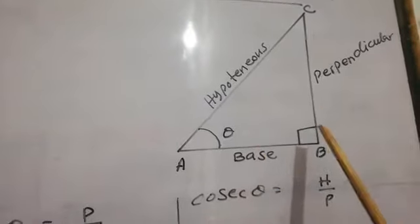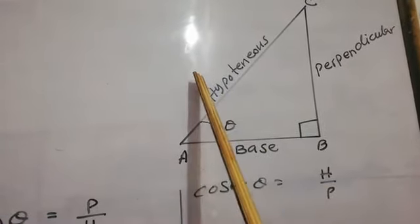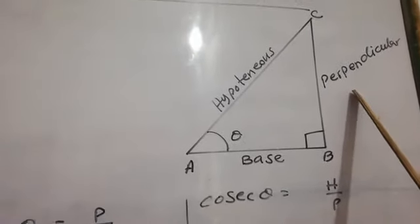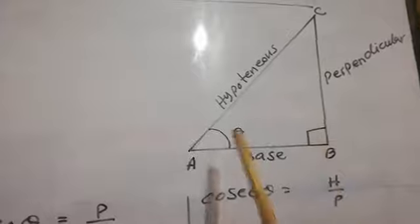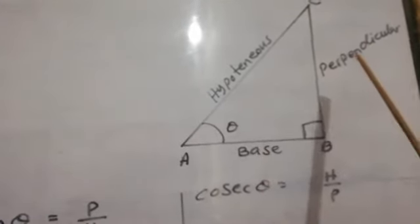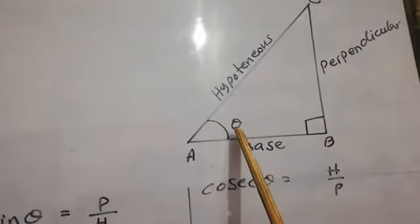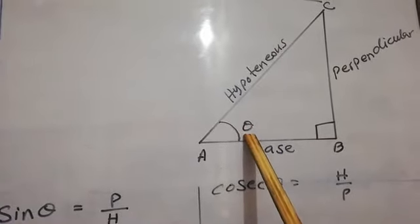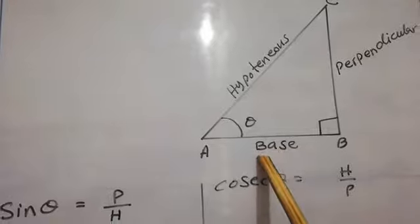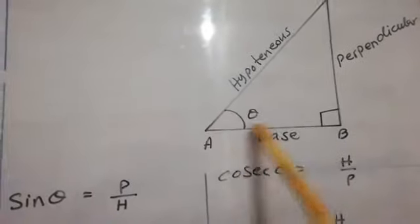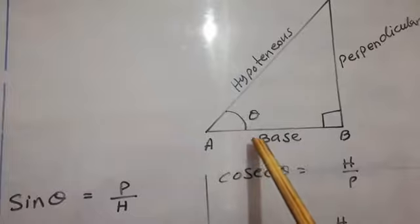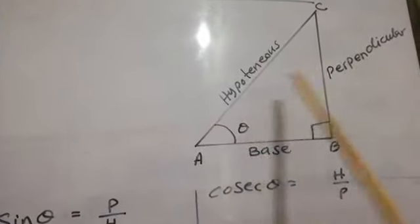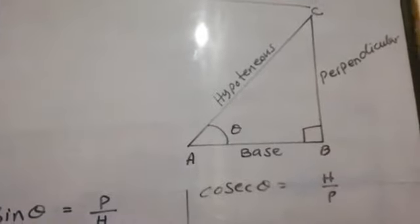The side which is opposite to the right angle is called the hypotenuse. But in right angle triangles, the perpendicular and the base can be changed — they depend upon the angle which is under discussion. For example, if this is angle theta, the line on which that angle is present is known as the base, and the side opposite to the angle under discussion is known as the perpendicular.